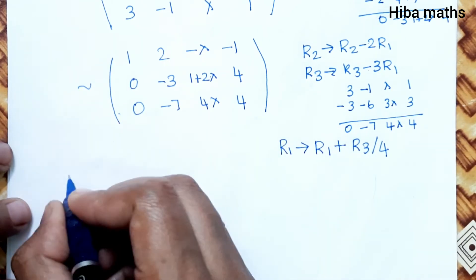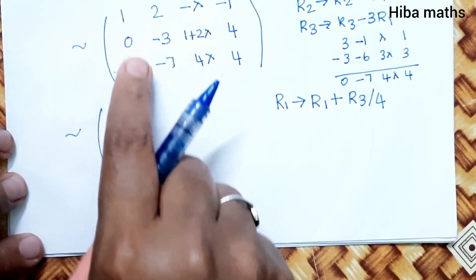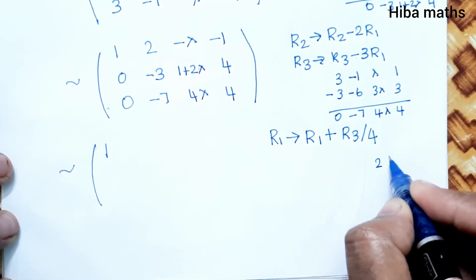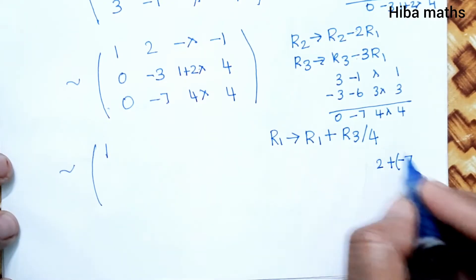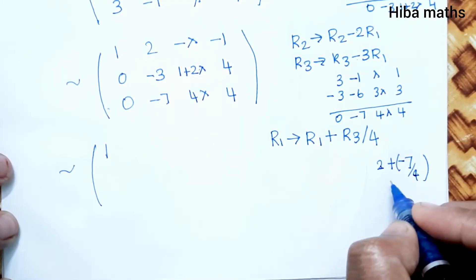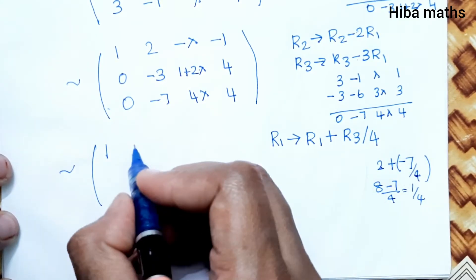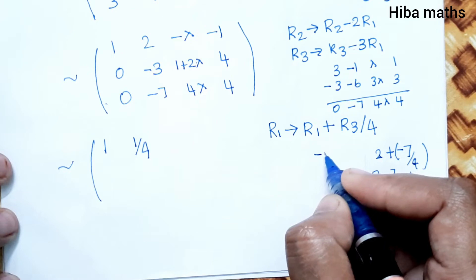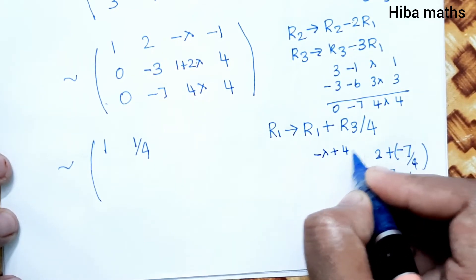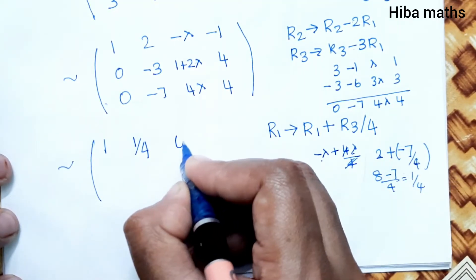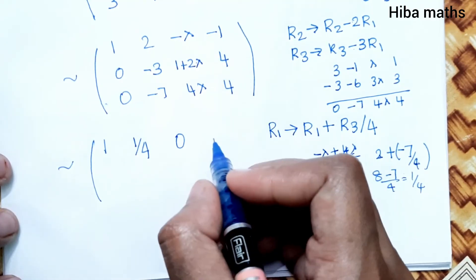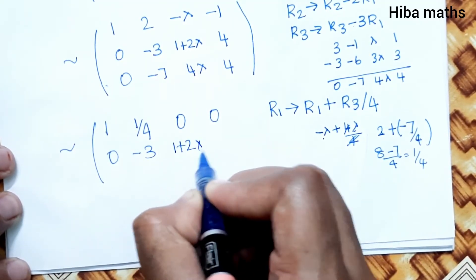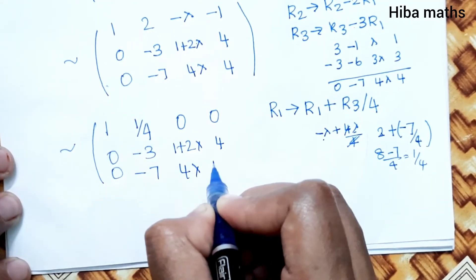We divide R3 by 4 to simplify. Then for R1, R1 plus (lambda/4)×R3 eliminates the lambda term. For R2, using R2 minus (7/4)×R3: the lambda terms give minus lambda plus 4lambda/4 = 0, and constants give 4 minus 4×(1) = 0. After these operations, the current matrix rows are: R1 = [1, 2, 0, 0], R2 = [0, -3, 1+2lambda, 4], R3 = [0, -7, 4lambda, 4].